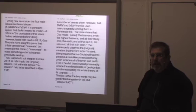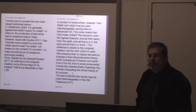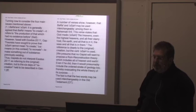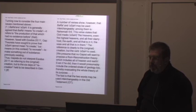Turning now to consider the four main issues mentioned above. Bahra and Asah. It is generally agreed that Bahra means to create. It refers to the production of that which had no existence before. Kyle and Delich, the premier Old Testament dictionary. However, faced with Exodus 20:11, gap theorists have sought to prove that Asah cannot mean to create but means in this context to recreate, to make something out of substance previously existing. Thus gapis do not interpret Exodus 20:11 as referring to the original creation but to the six days of recreation held to be described in Genesis 1:2 and following. Well that's not really true either. Gap say that it is, well okay in this context okay I'll go along with that. We'll say that. A number of verses show however that Barah and Asah may be used interchangeably. Among them is Nehemiah 9:6. This verse states that God made Asah the heavens even the highest heavens and all their starry hosts the earth and all that is in it the season that all that is in them. The original, or the reference is clearly to the original creation. Is it?